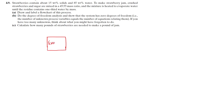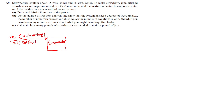This is our evaporator. The first stream is strawberries: M1 pounds of strawberry with 0.15 pound solids per pound and 0.85 pound water per pound.